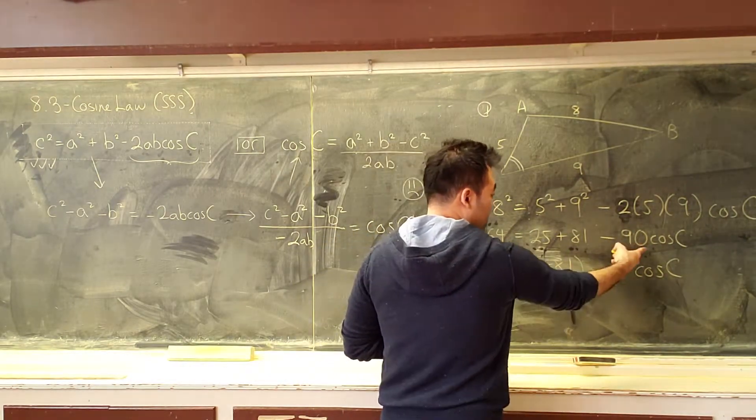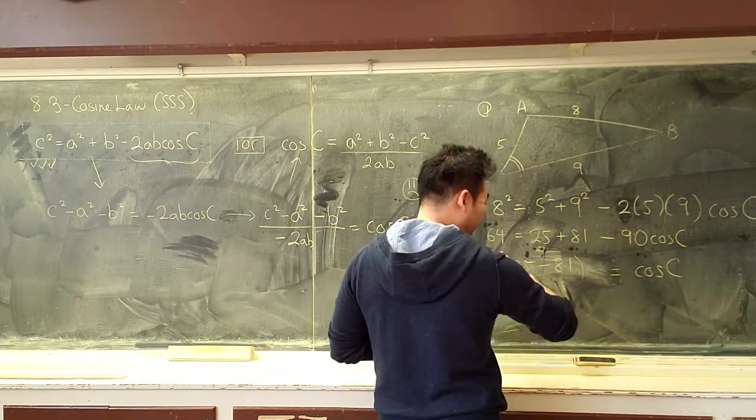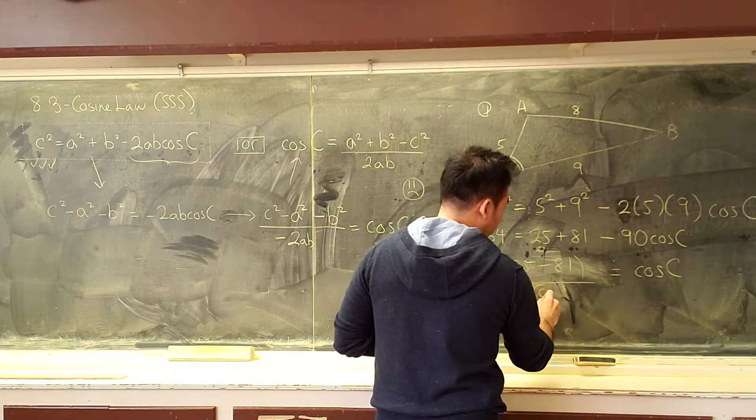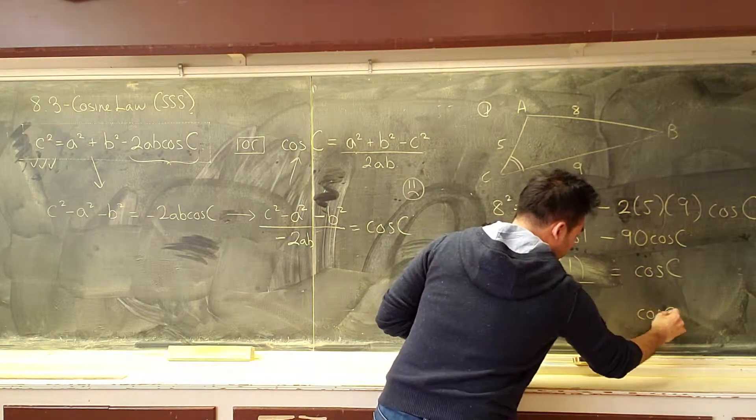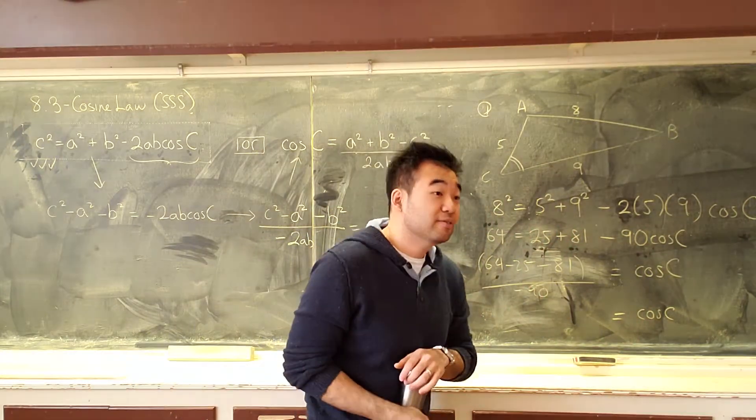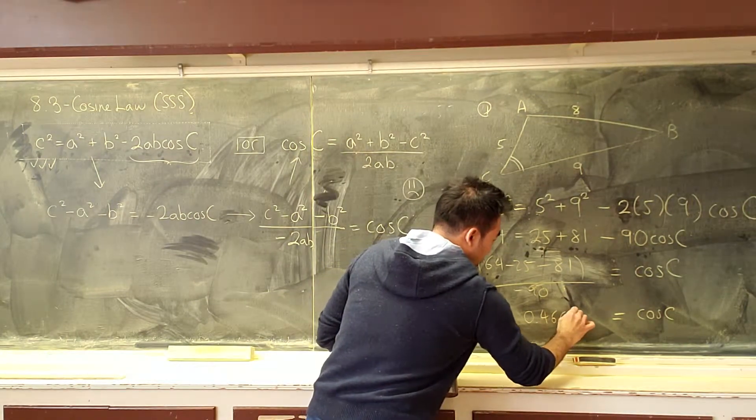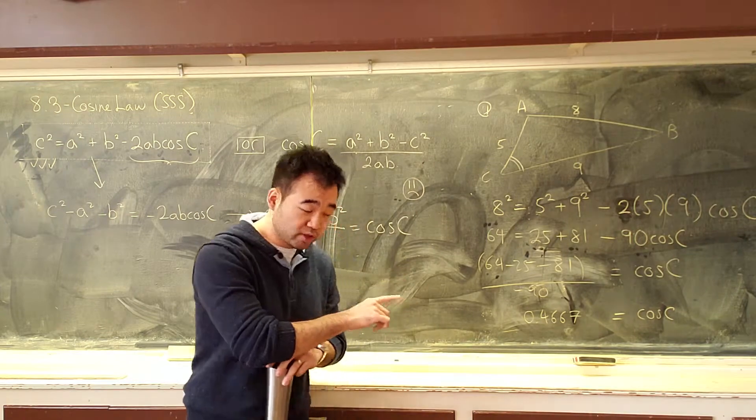And then once we have all that done, how do I get cosine all of them? Divide the entire thing by a negative. 90. So cosine C is? 0.4667.